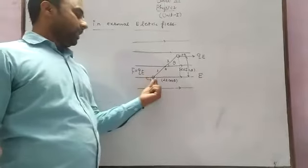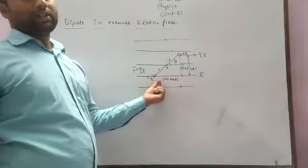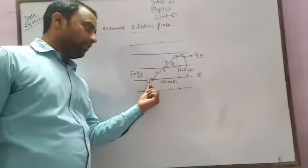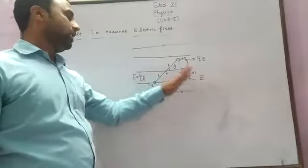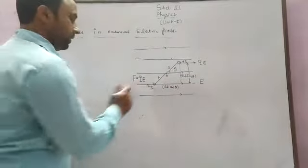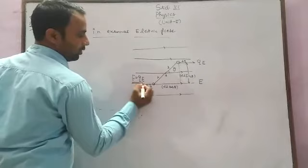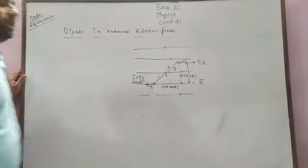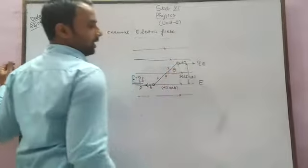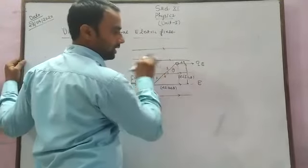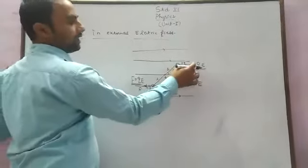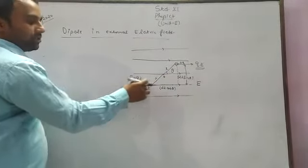We already know that when any charged particle is placed in an external electric field, a force acts on the charge. Here the charge is negative, and the direction of the electric field is from here to here. For a negative charge, the direction of the force is opposite to the electric field. For the positive charge Q, the force is in the same direction as the electric field. Both forces have magnitude Q into E.